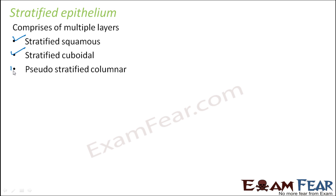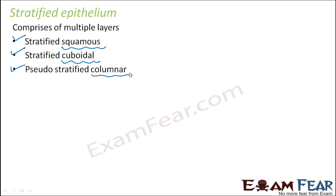You can guess from the names. Squamous are those cells which are flat and thin. Cuboidal are those which are shaped in the form of a cube. And columnar are those which are tall, pillar-like cells.